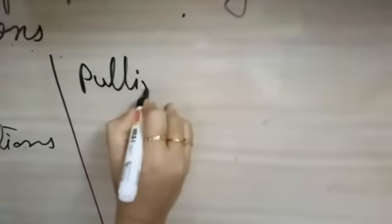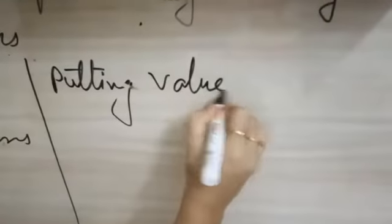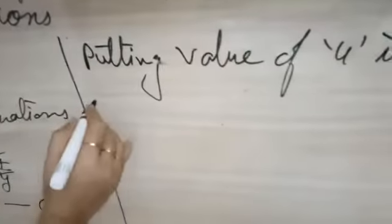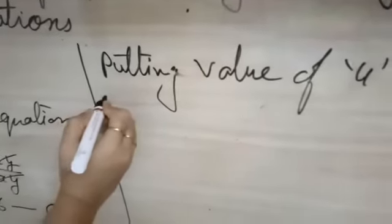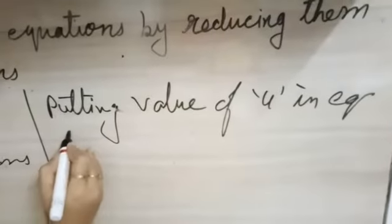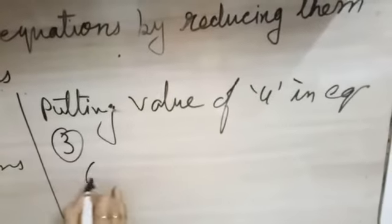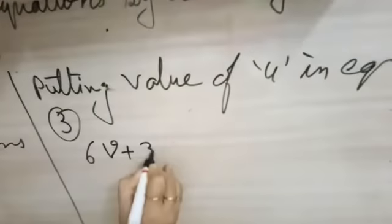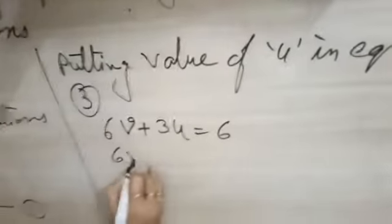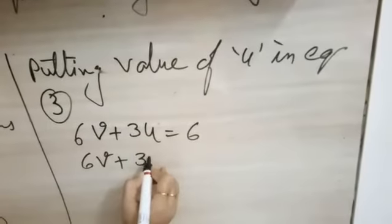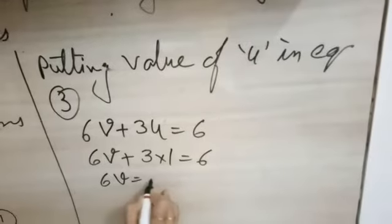Now u is equal to 1, so putting the value of u in an equation. We will put the value of u in the easy equation, let us choose equation 3. So it will become 6v plus 3u is equal to 6, so 6v plus u times 1 is equal to 6. So 6v is equal to, this will become 3.